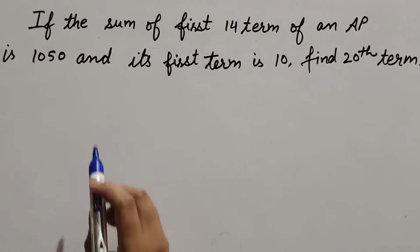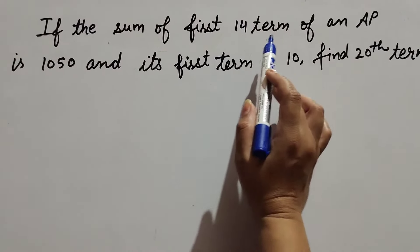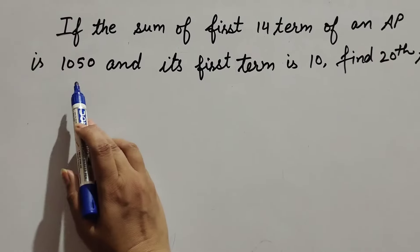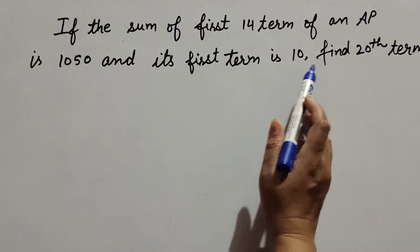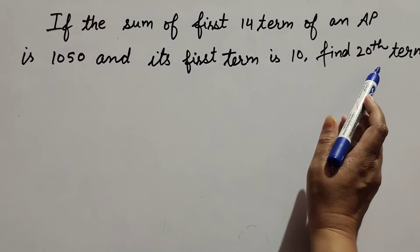Hello friends, welcome to my channel. In this video we discuss: if the sum of first 14 terms of an AP is 1050 and its first term is 10, find the 20th term of the given AP.